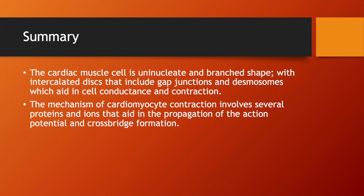In summary, cardiac muscle cells are uninucleate and branch-shaped. They have structures called intercalated discs that include gap junctions and desmosomes, which facilitate cell conductance and contraction. The mechanism of cardiomyocyte contraction involves several proteins and ions that aid in the propagation of the action potential and the formation of cross-bridges. Thank you.